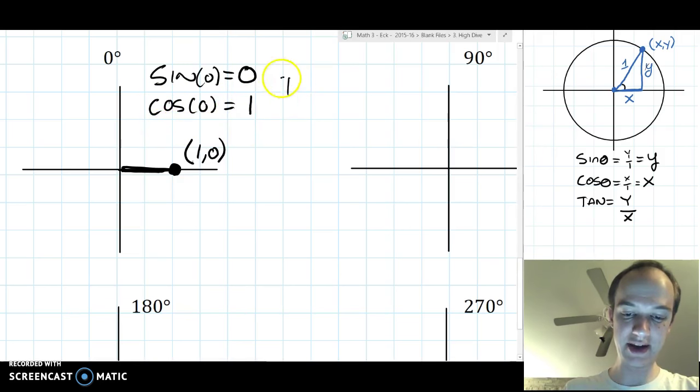And tangent of 0 is going to be y over x. 0 over 1, which is just 0.